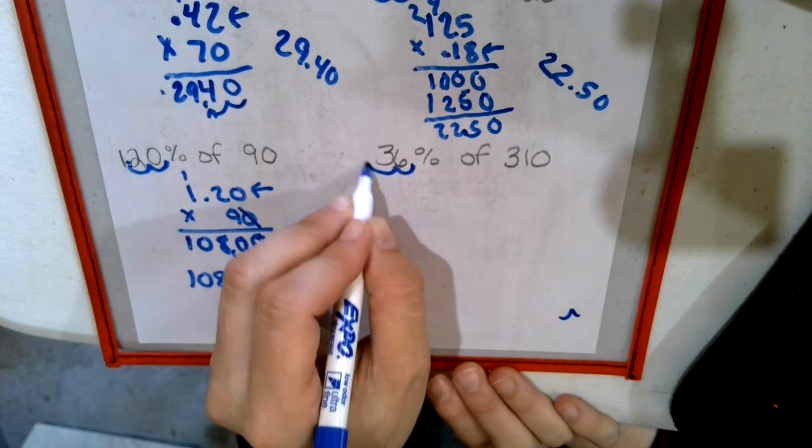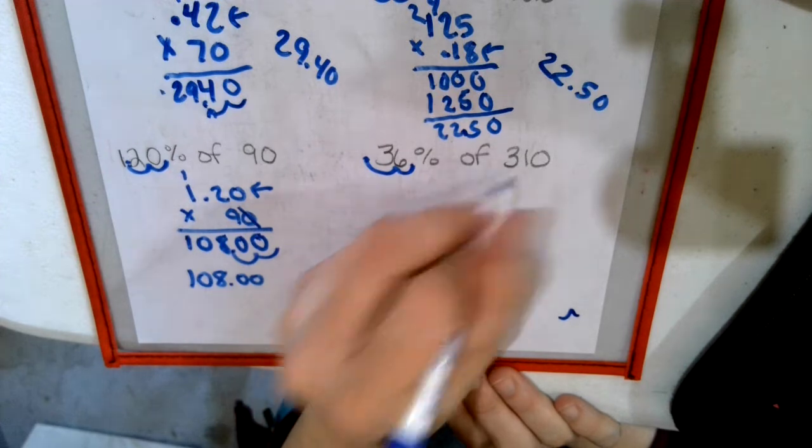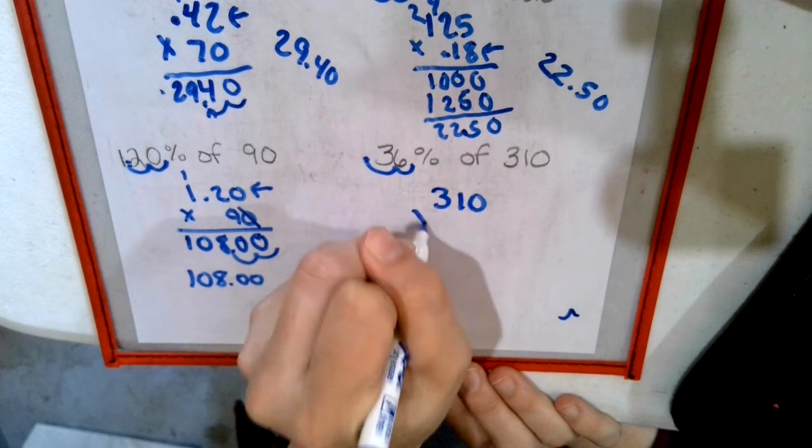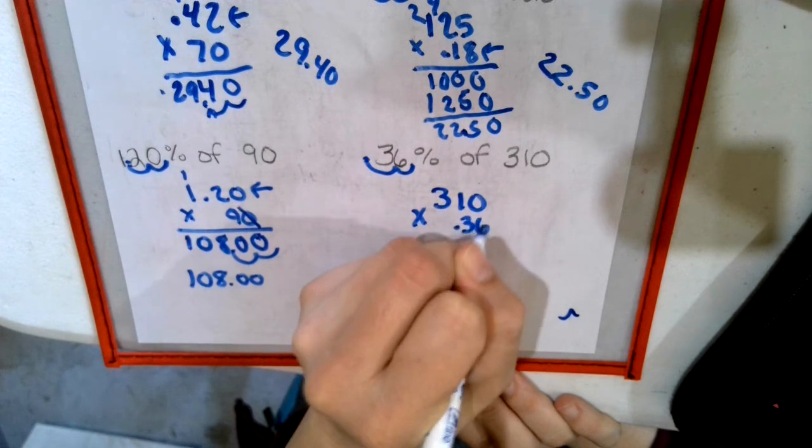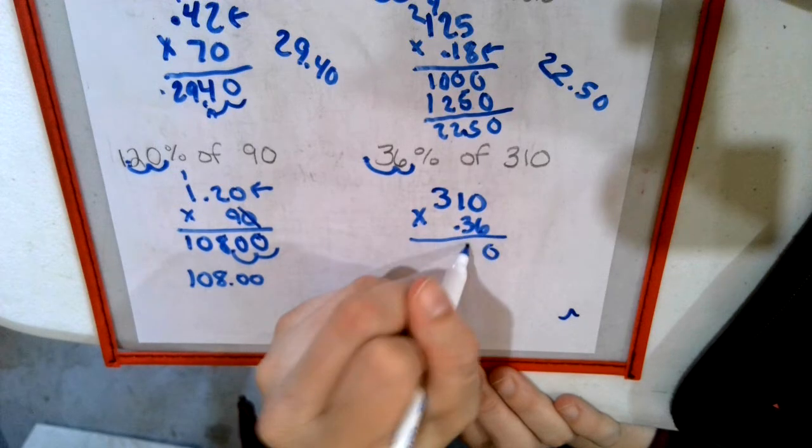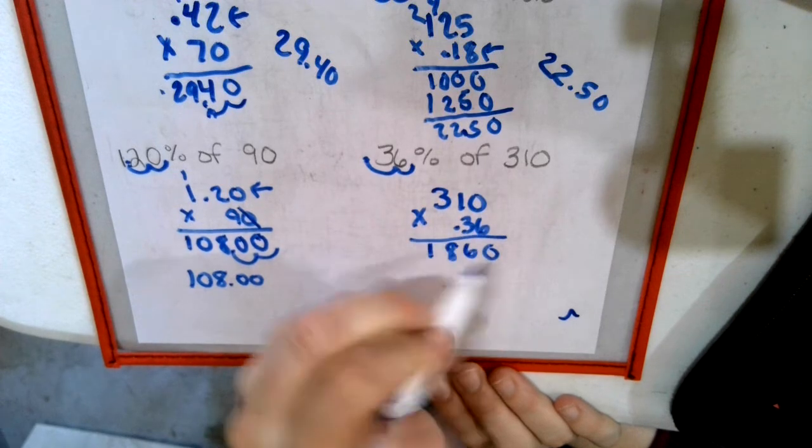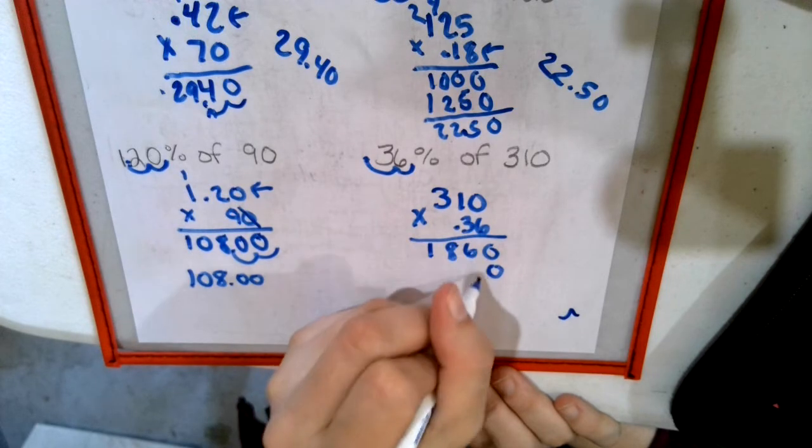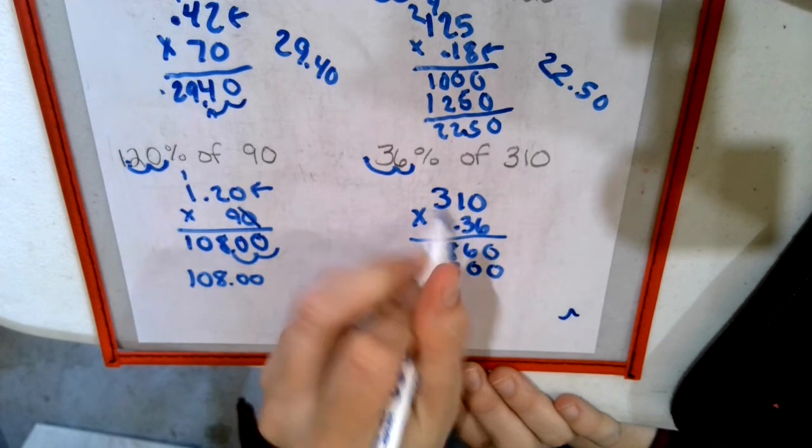Jump 2, one, two. This was longer - 310 times .36. 0, 6, 18. Drop a 0. 0, 3, 9.